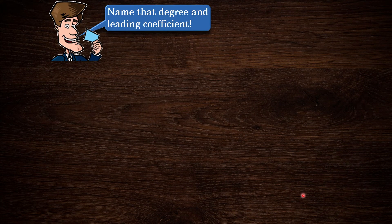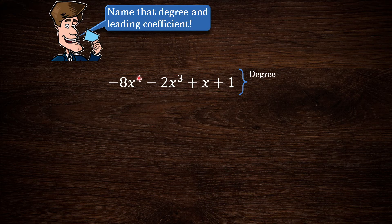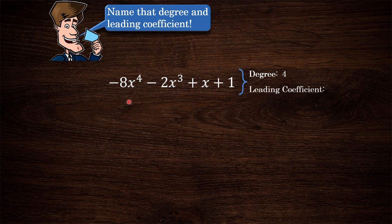We'll finish with some examples — a little game: name that degree and leading coefficient, starting with this polynomial expression. What is the degree? Well, the degree is the highest exponent on x, which as we can see is 4. So this is a degree 4 polynomial, and the coefficient for that x to the 4 term is negative 8, which means that our leading coefficient is negative 8.